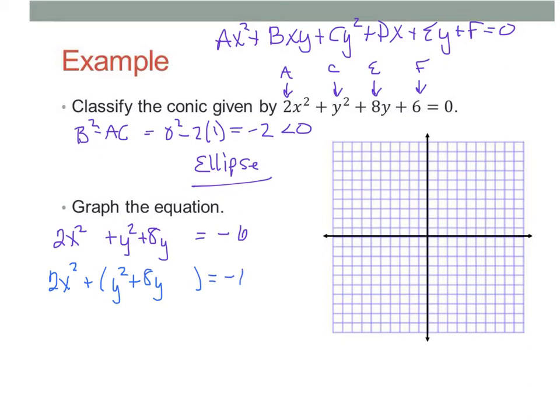We're not going to do much with the 2x squared at the moment. But we are going to complete the square for the y's. And so, we're going to kind of group it together here. Remember, completing the square is you take half of the middle number, square that, and add it to both sides. So, half of 8 is 4. 4 squared is 16. And thus, we're going to add 16 to both sides. And then we can rewrite this. 2x squared plus, this factors now into y plus 4 squared equals 10. But we don't want it to equal 10. We want it to equal 1. So, we're going to divide everything by 10.